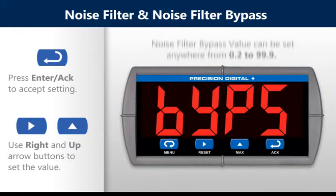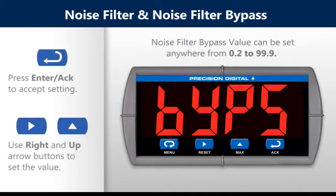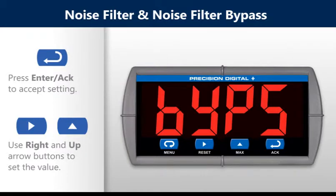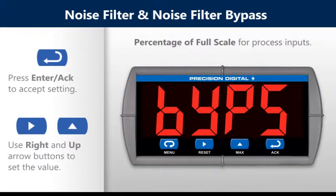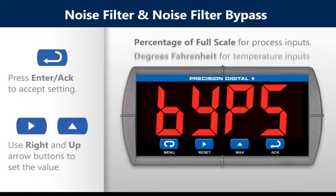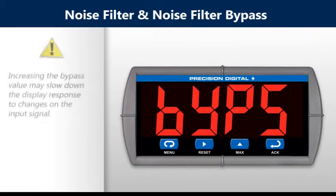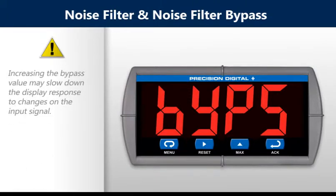The noise filter bypass value may be set anywhere from 0.2 to 99.9. It corresponds to the percentage of full scale for process inputs and to degrees Fahrenheit for temperature inputs. Increasing the bypass value may slow down the display response to changes on the input signal.